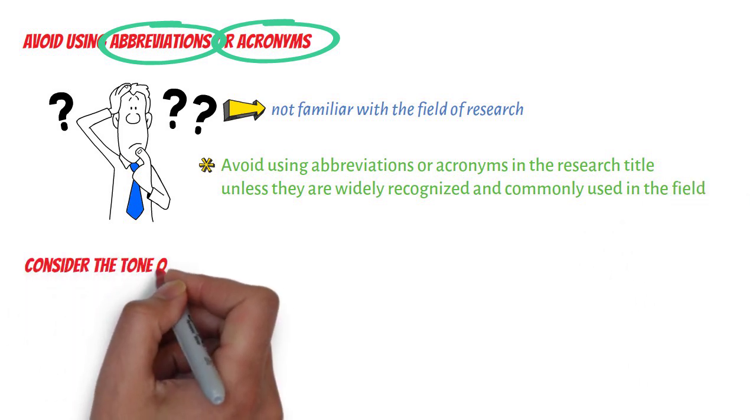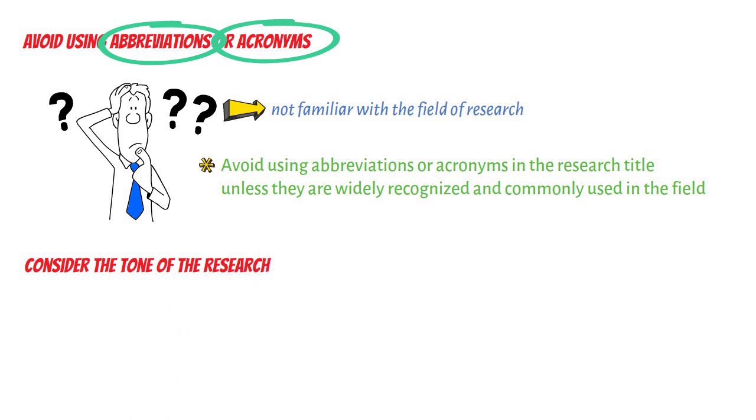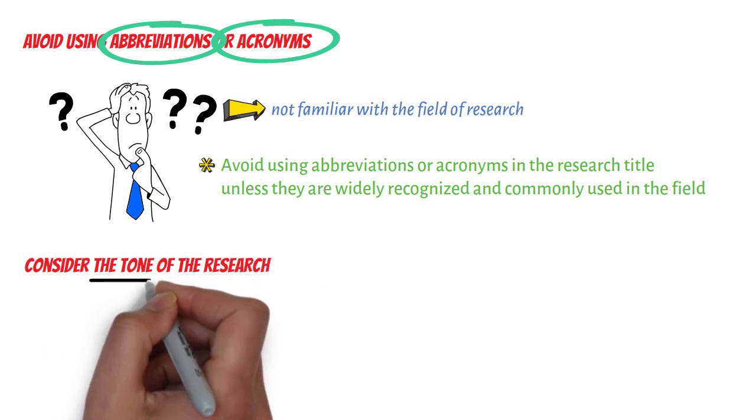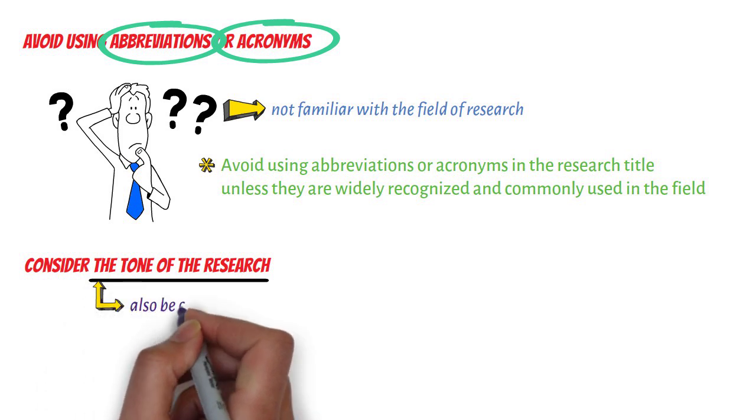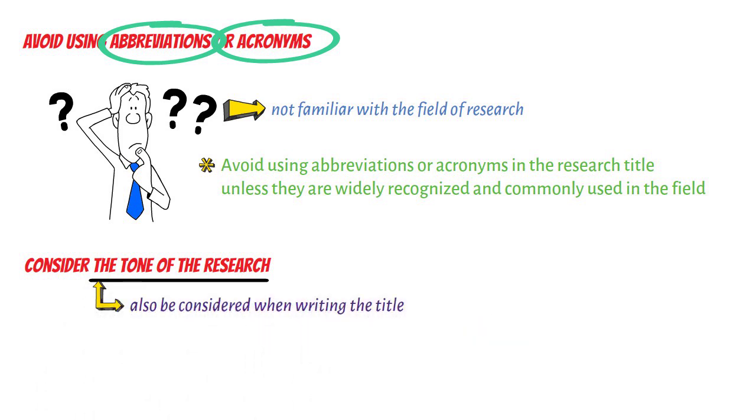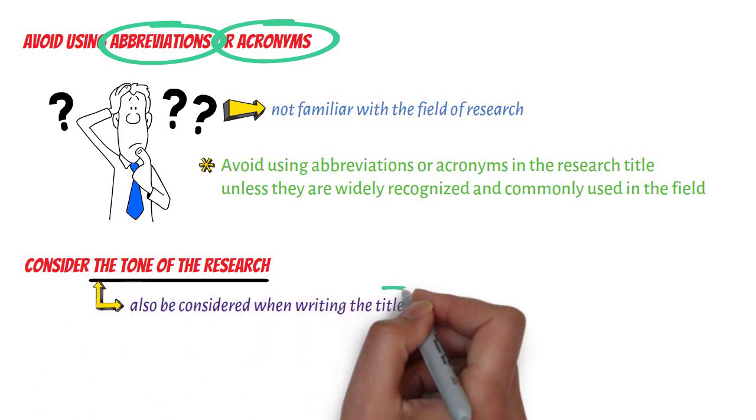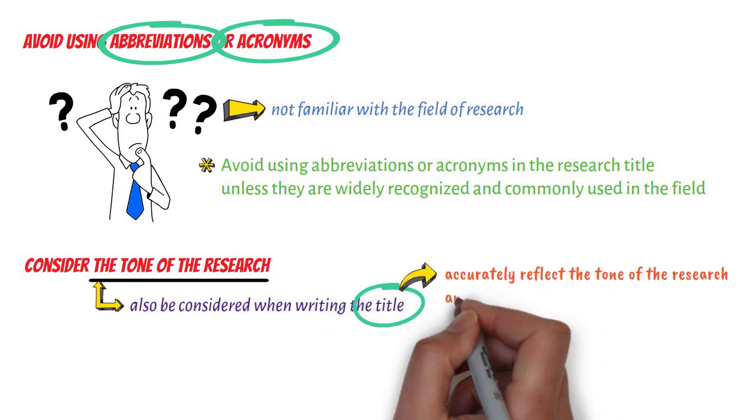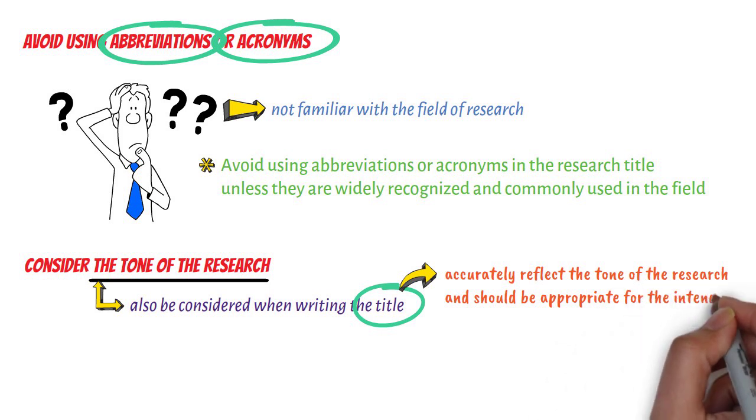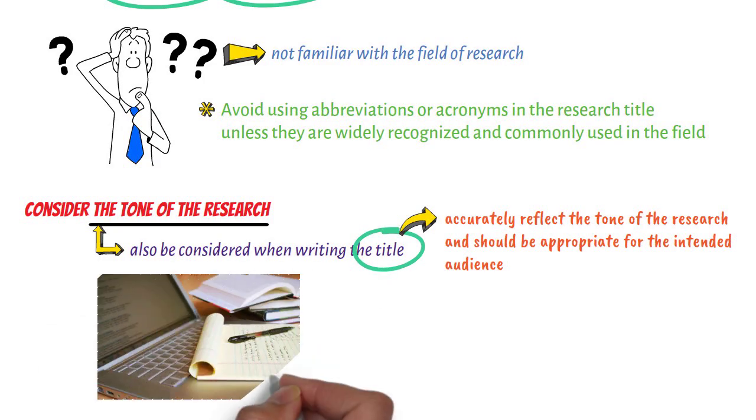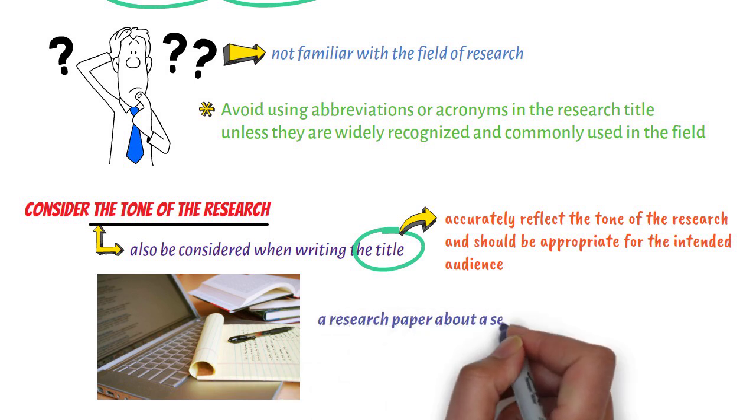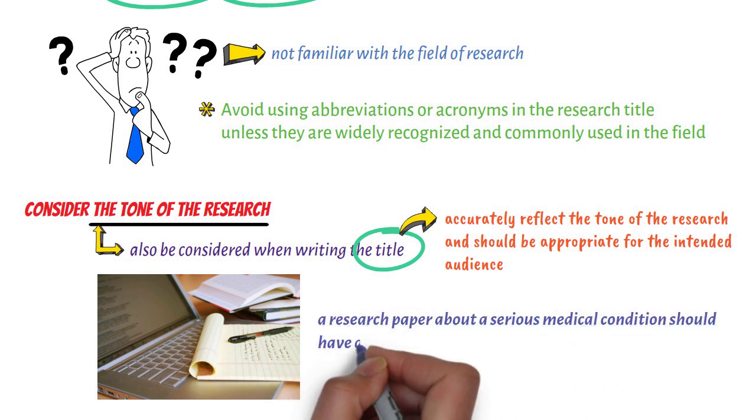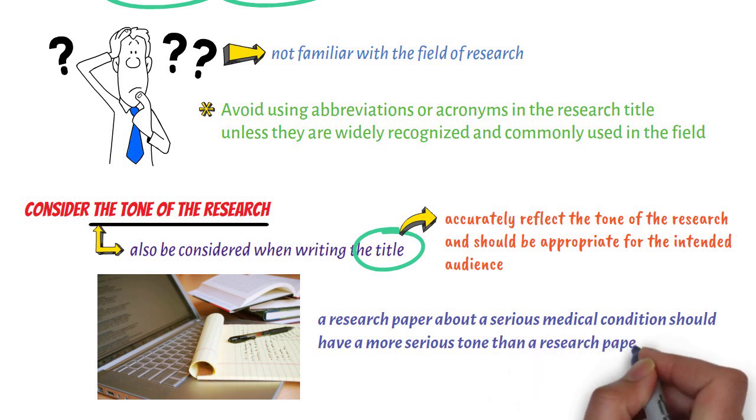Seventh, consider the tone of the research. The tone of the research should also be considered when writing the title. The title should accurately reflect the tone of the research and should be appropriate for the intended audience. For example, a research paper about a serious medical condition should have a more serious tone than a research paper about a pop culture phenomenon.